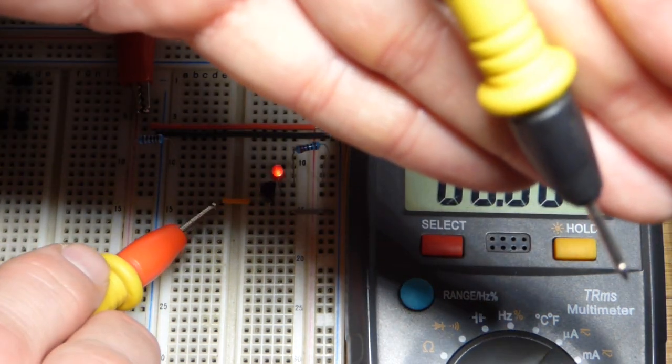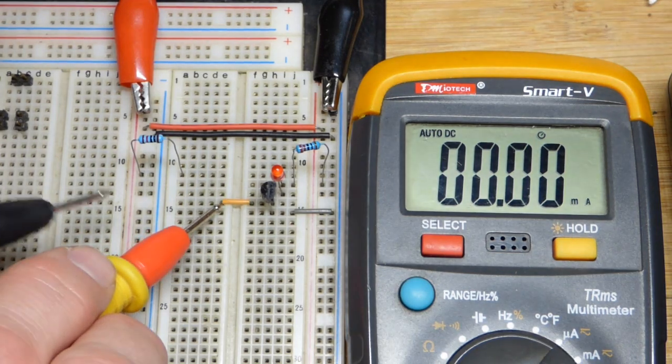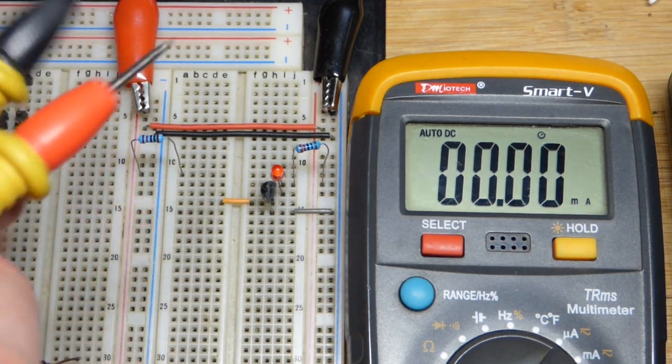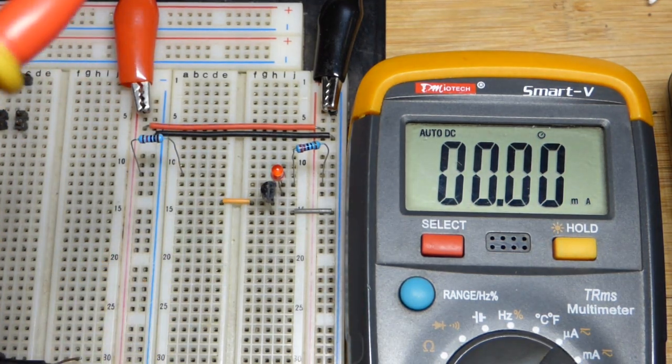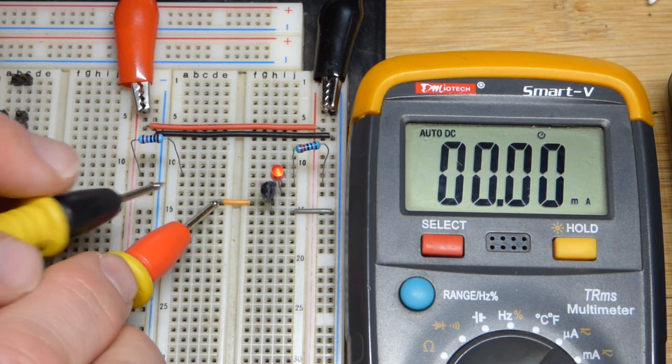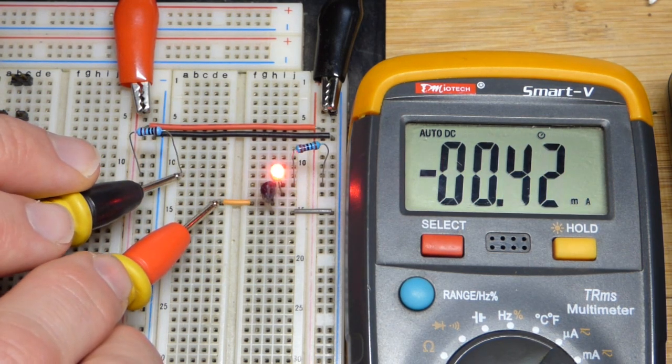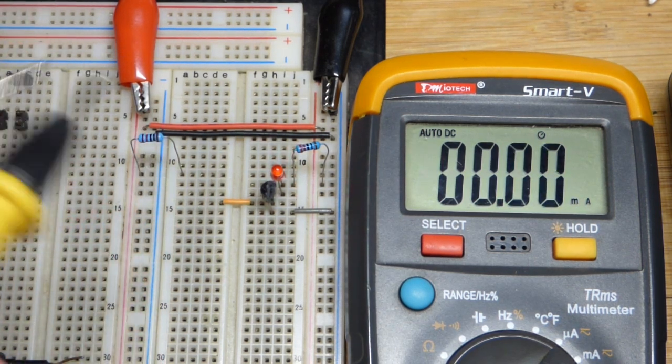And it'll be close to a milliamp and even the probe is giving a false signal right there, but that won't matter once... oops, I have these backwards. We would just get a negative current right there. You can see a negative current if you put it in backwards.